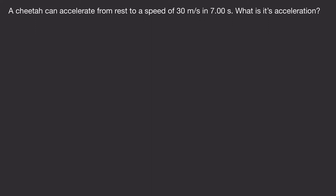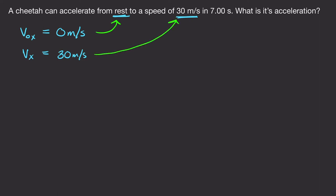A cheetah can accelerate from rest to a speed of 30 meters per second in a time of 7.0 seconds. What is its acceleration? Starting from rest means initial velocity is zero. Final velocity is 30 meters per second. Time is 7.00 seconds. We're looking for acceleration in the x direction.